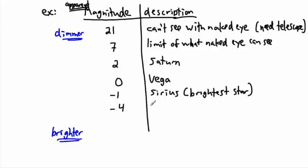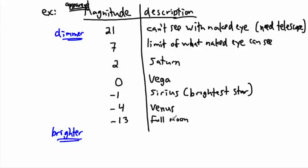Negative four is the planet Venus. Now, Sirius and Vega are stars that actually emit light, whereas Saturn, Venus, and other planets mainly reflect light from the sun — the sun's light bounces off Saturn and comes to us. Going further, negative 13 is a full moon, which can light up the sky pretty well. And negative 26 is the sun.